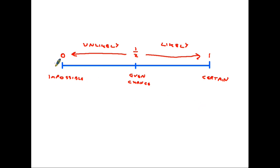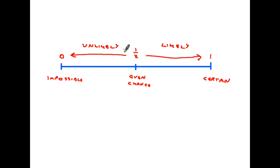Remember, everything is in between zero and one. Under even chance I wrote one out of two — that is a fraction, a half. I could have put 50% for even chance; they are all good ways of describing it. But we tend to use fractions when describing probability, and you'll see why in the examples coming up.